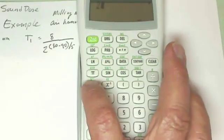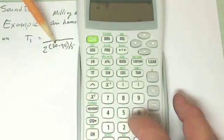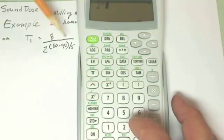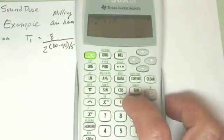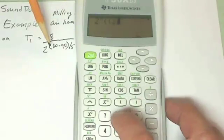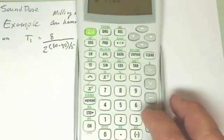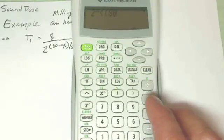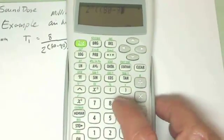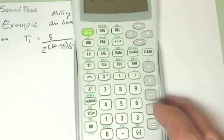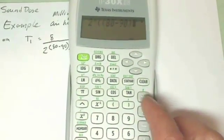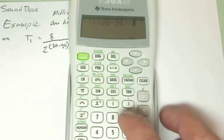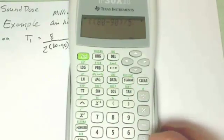2 raised to the 80 minus 90. In my calculator, I have to put that in parentheses. Two parentheses, 80, minus 90, and then I have to close the parentheses, and I have to divide it by 5.